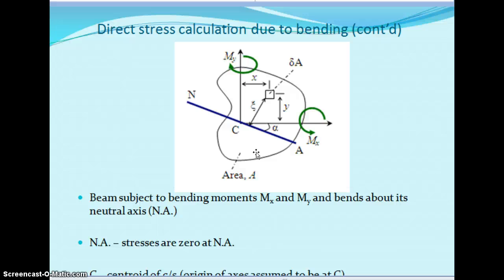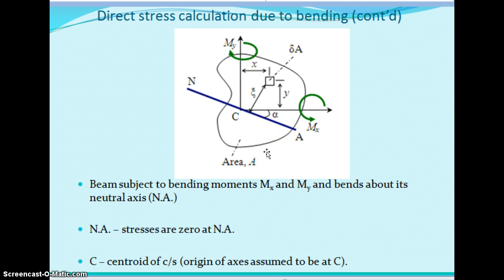For any symmetrical cross-section, Ixy equals zero. This is because, for a symmetrical cross-section, the centroid is aligned on either the x axis or the y axis, so the offset distance about x or y will be zero in one direction — making the integral of xydA equal to zero. For unsymmetrical cross-sections, we will get all three components: Ixx, Iyy, and Ixy.